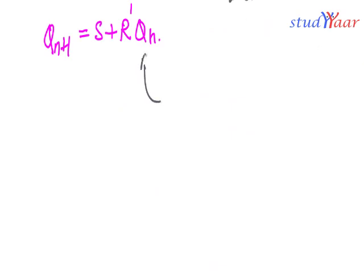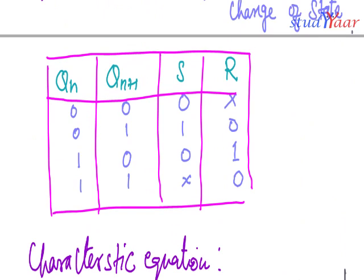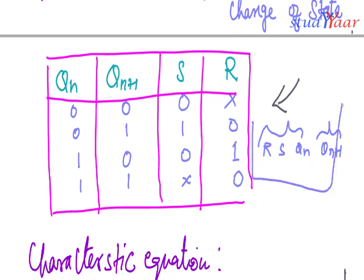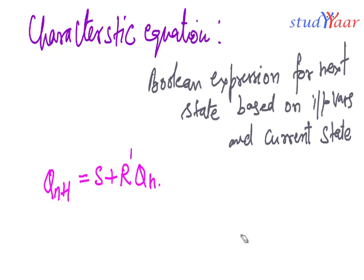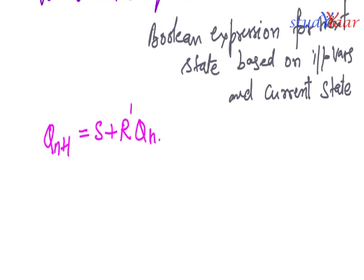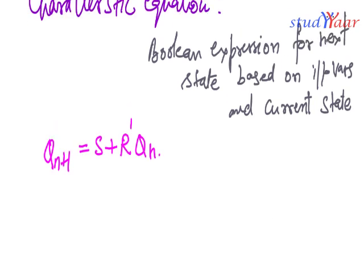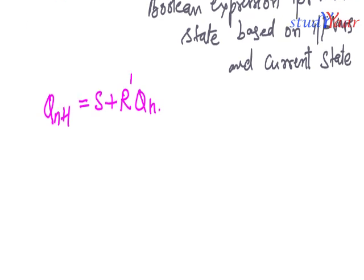To get this equation, you take the truth table and write it with R, S, Q(n) as inputs and Q(n+1) as the output. From this table, you create a K-map and simplify Q(n+1) to get this particular equation. This characteristic equation determines the next state of your latch.